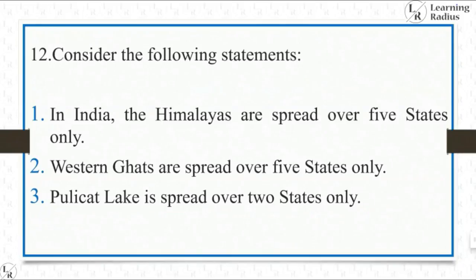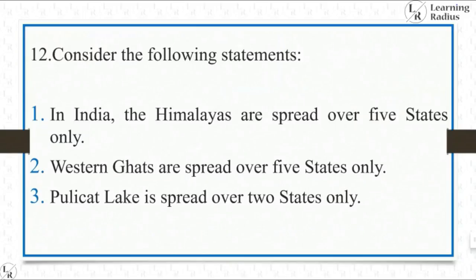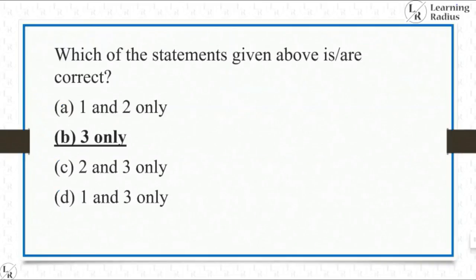Consider the following statements. In India, the Himalayas are spread over five states only — that is wrong. The Western Ghats are spread over five states only — also wrong. Pulicat Lake is spread over two states only — that is right. The first and second statements are wrong, the third statement is right, so the answer is three only. The Himalayas spread over almost all northern and northeastern states of India, and the Western Ghats traverses Kerala, Tamil Nadu, Karnataka, Goa, Maharashtra and Gujarat — that is six states.